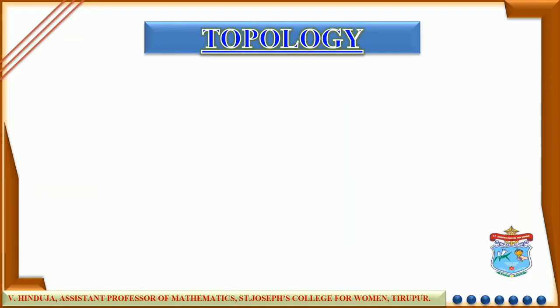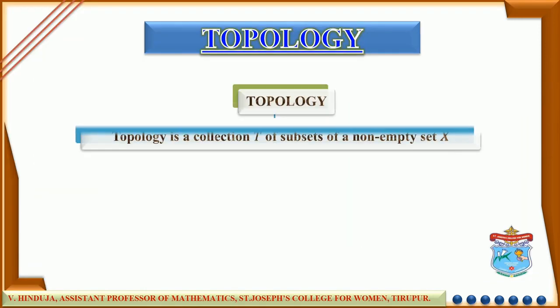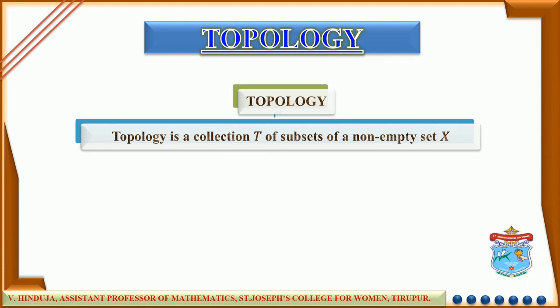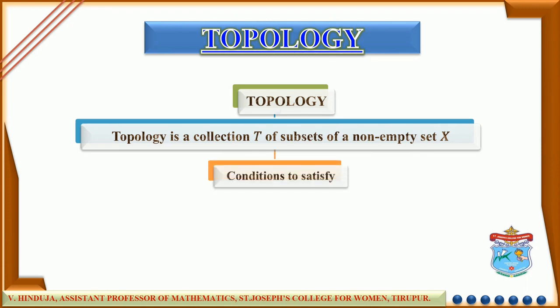So what is topology? It is basically a collection, say T, of subsets of a non-empty set, say X. This collection of subsets should satisfy the following four conditions to be a topology.